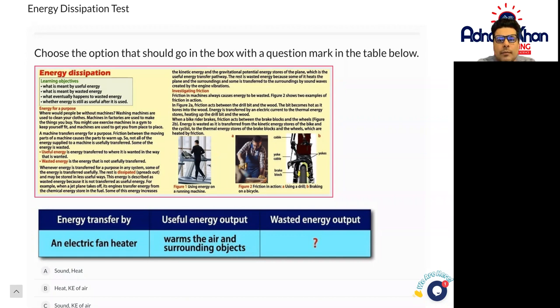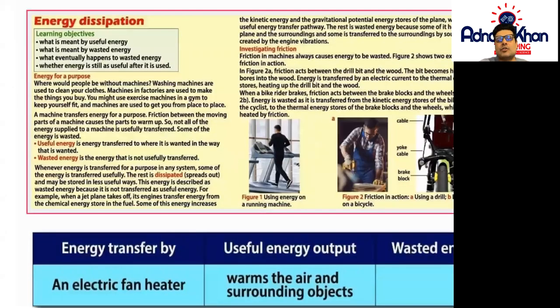Whenever energy is transferred for a purpose in any system, some of that energy is transferred usefully. The energy that is not useful, that is lost and spread out, is called dissipation or energy dissipation.